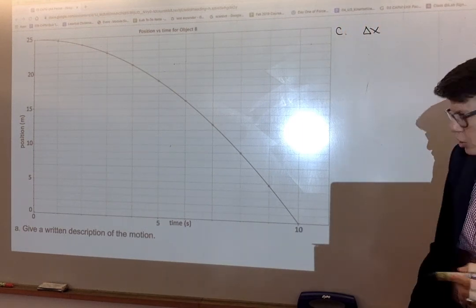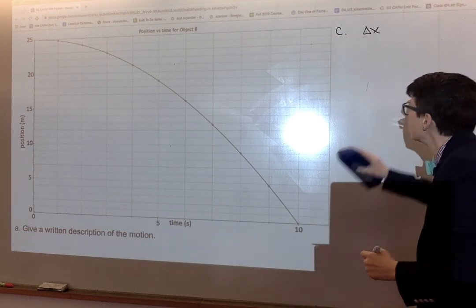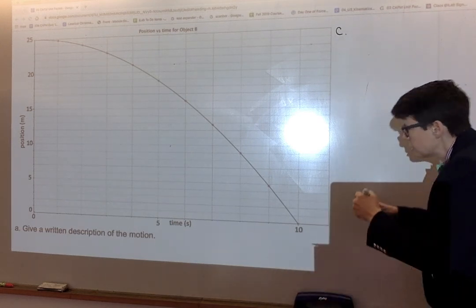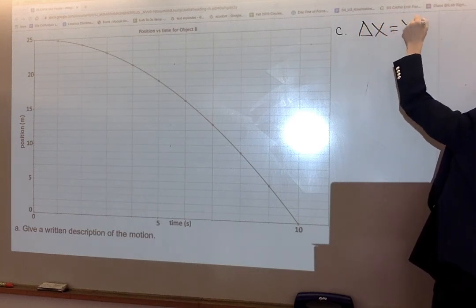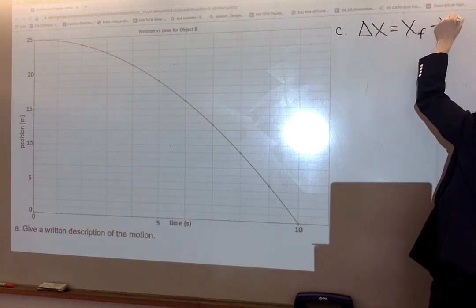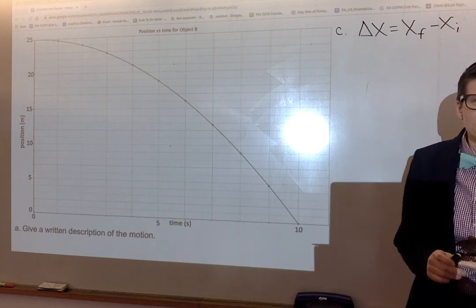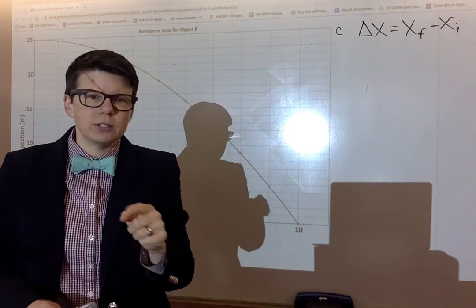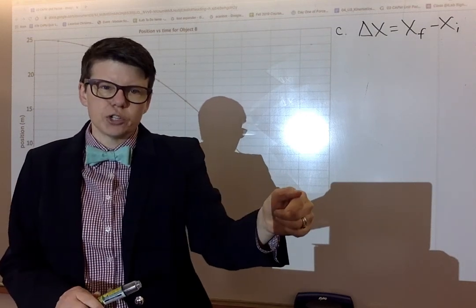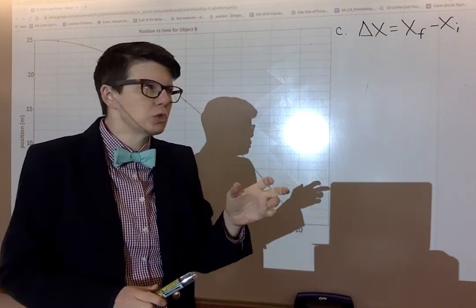Displacement is change in position, aka delta x. Let me write that larger so that it's easy to see on the video. Remind yourself of the basic definition of the thing being asked for. So now I'm going to go from two to eight seconds, figure out the two positions of the object, find the difference between them.